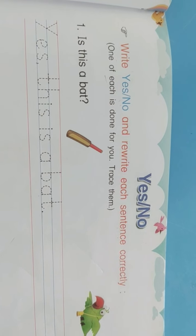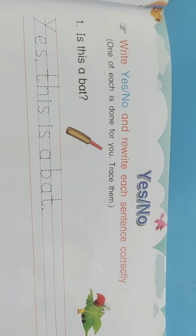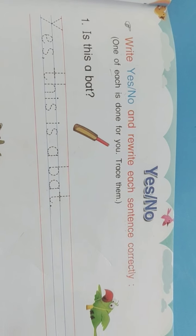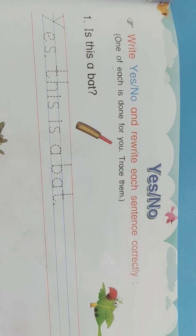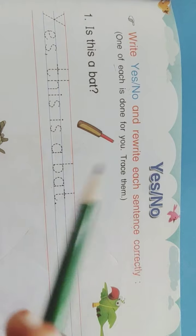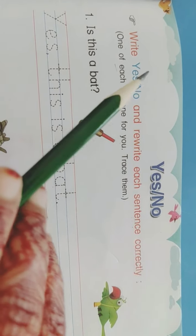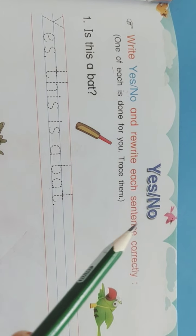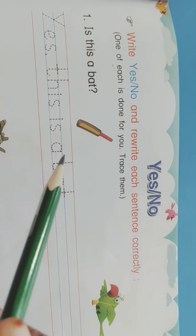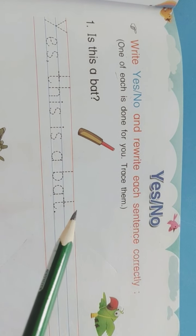Good morning students. So students, all of you open page number 45 from your Rise and Shine textbook. Okay, you have to write whether the object is correct or wrong.